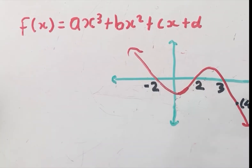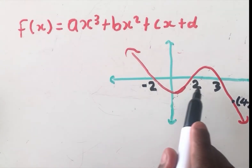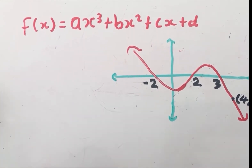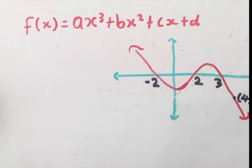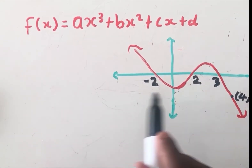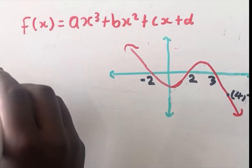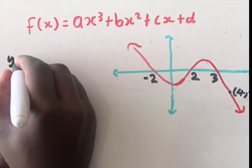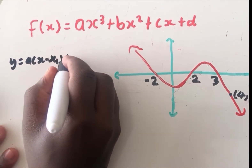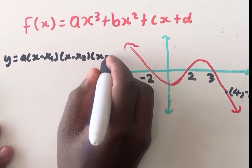Here is the situation. In this particular equation, we are given x-intercepts and an extra point. Whenever you are given x-intercepts and an extra point, you use the x-intercept form of the cubic graph. When you're given x-intercepts, you use the x-intercept form. The x-intercept form of the cubic graph is: y = a(x − x₁)(x − x₂)(x − x₃).